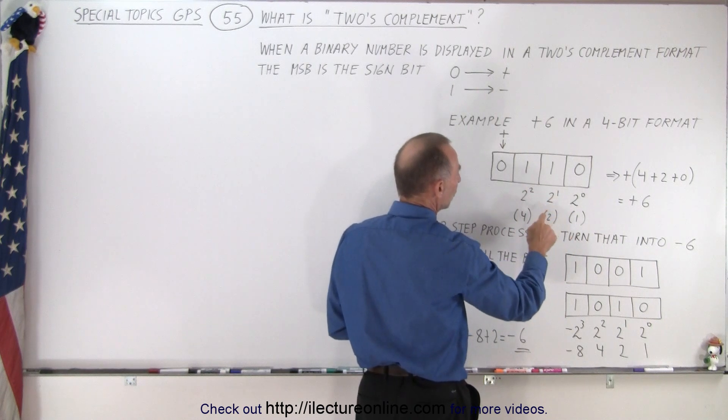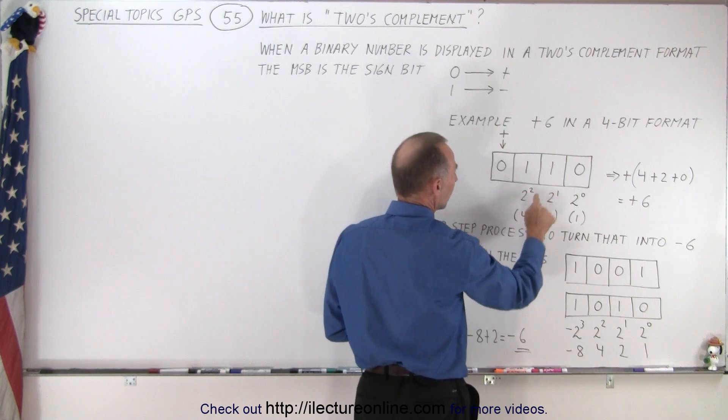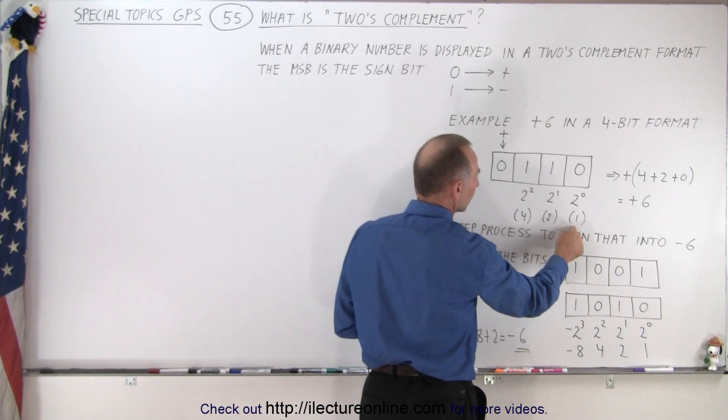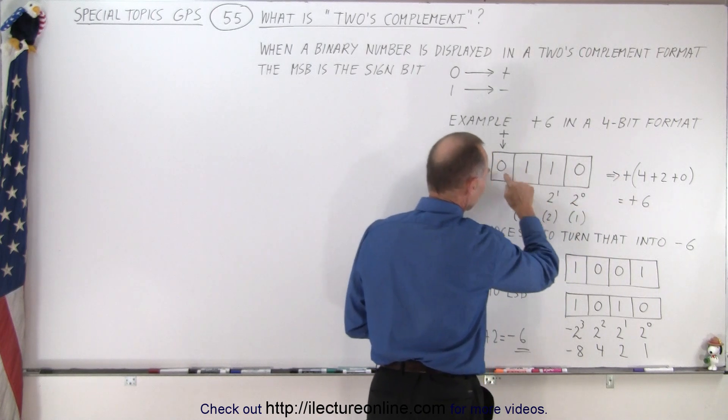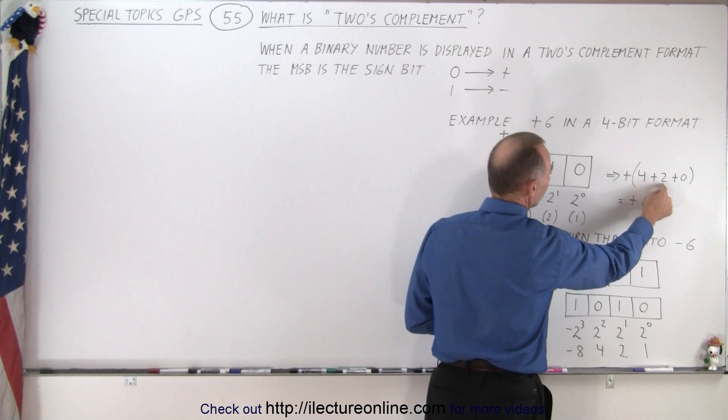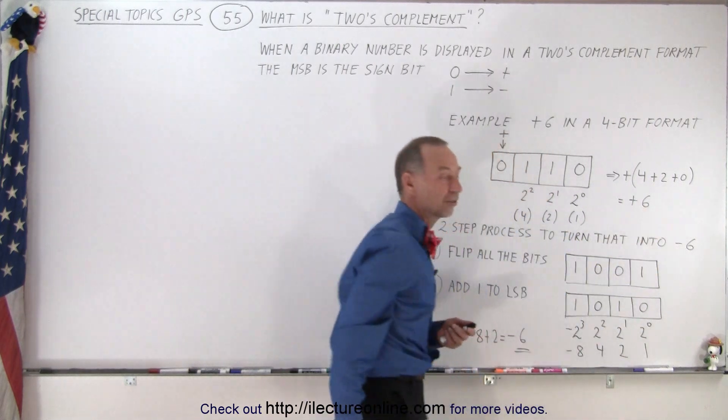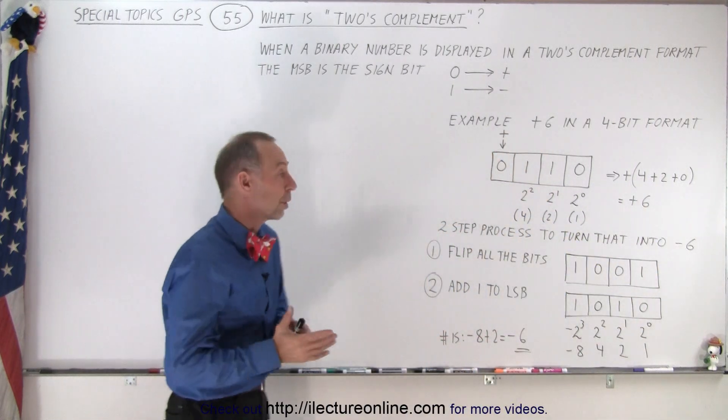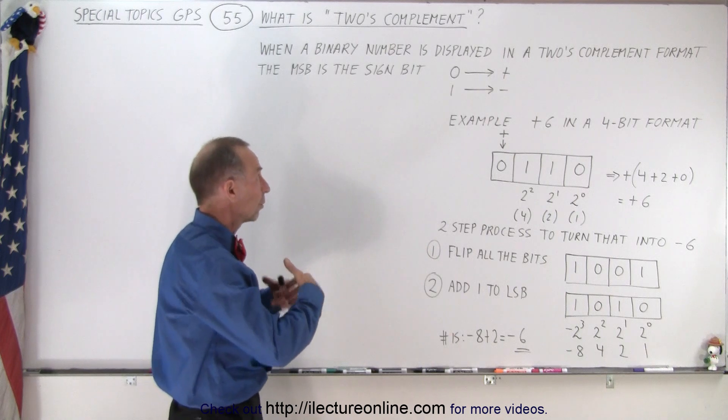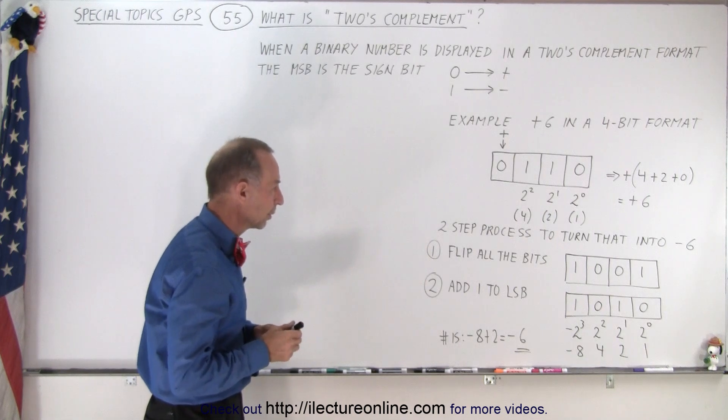Notice, the number then will be equal to 1 times 4 plus 1 times 2 plus 0 times 1. And so that's the plus sign from here, plus 4 plus 2 plus 0, so we end up with a plus 6. Now what do we do when we want to turn that into a negative 6 when we're dealing with 2's complement?